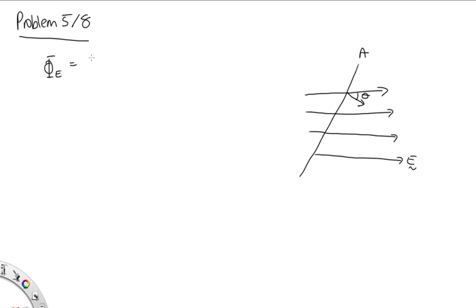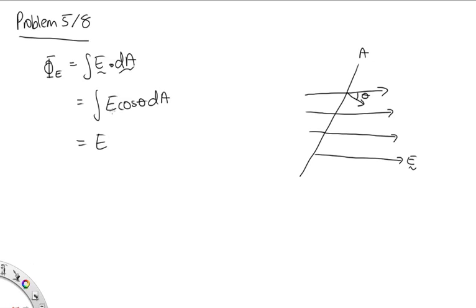φ_E is equal to the integral of E dot dA. To get rid of this dot product, we include a cos theta, so we write this as E cos theta dA. The electric field is uniform, so we can pull it out front. Cos theta is a constant, and integrating dA over the surface just gives the surface area. So this is equal to E A cos theta, and that's the answer.